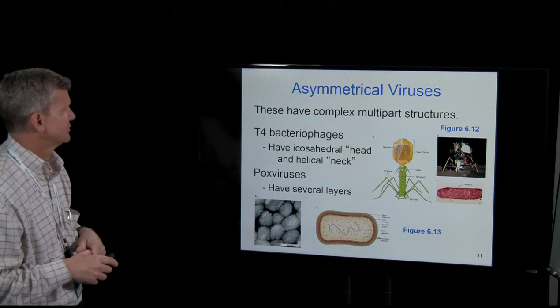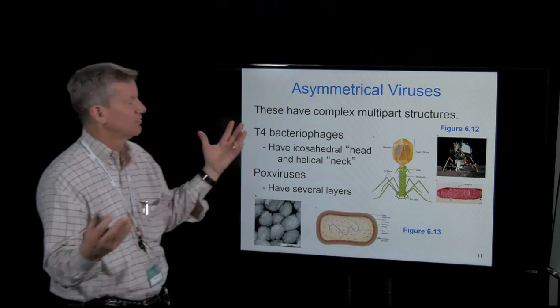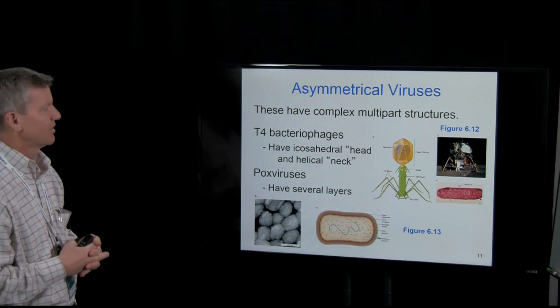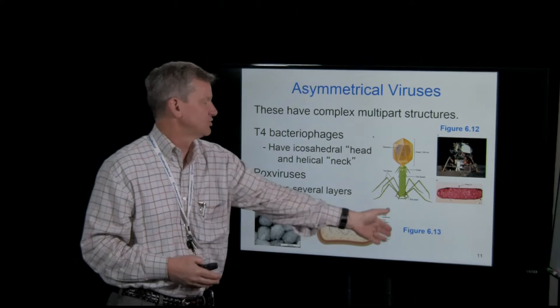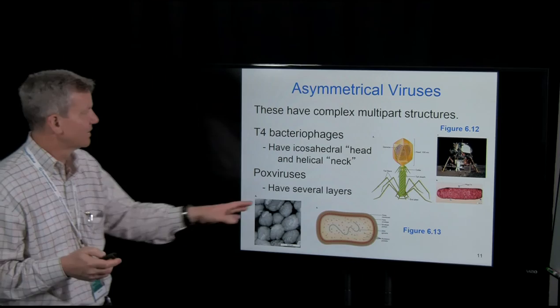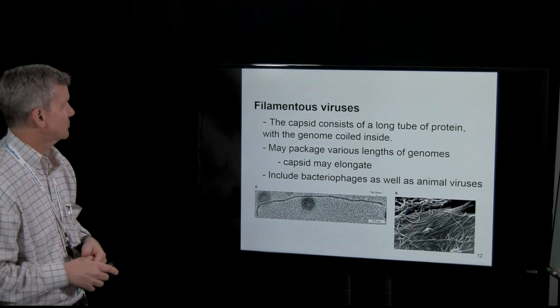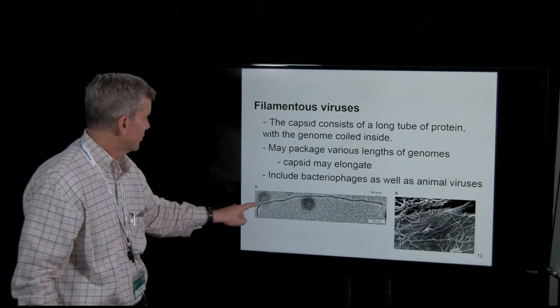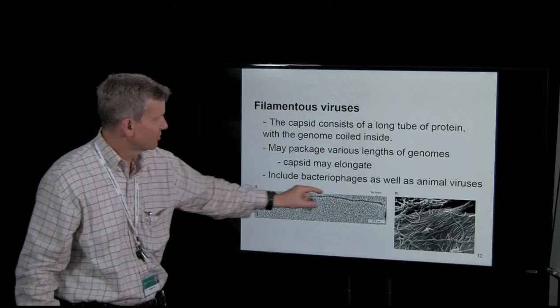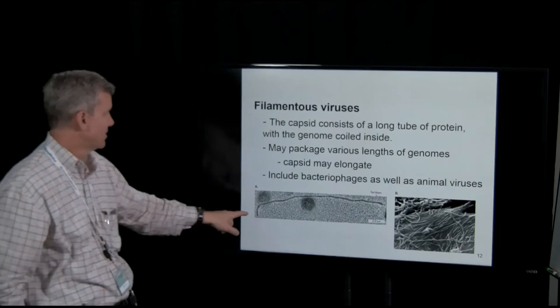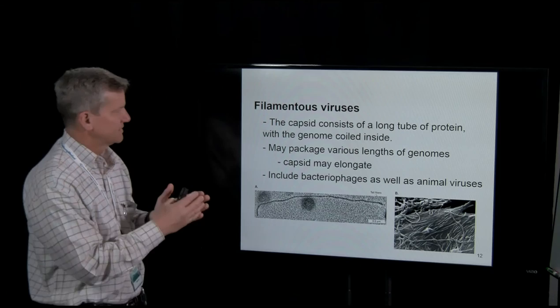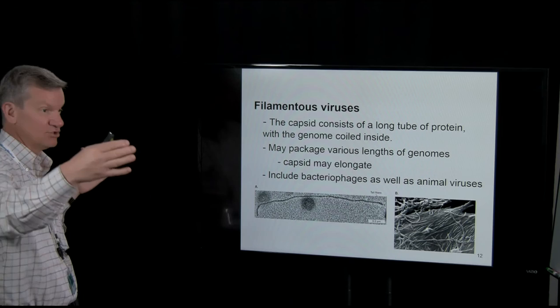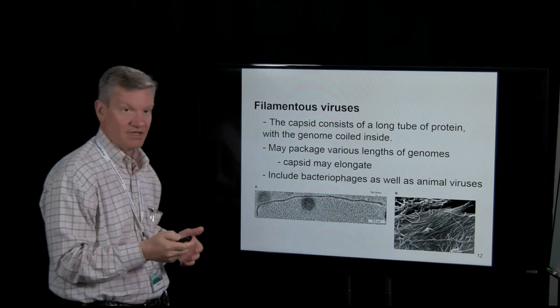Asymmetrical viruses — if you cut this virus in half, the top is going to be different from the bottom. Many viruses are not symmetrical, though some are. Filamentous viruses have a long capsid structure, and within this capsid is a circular piece of RNA. The interesting thing about filamentous viruses is that depending on the length of the genome, they can package larger and larger genomes — the capsid just keeps getting bigger depending on how big the genome is.